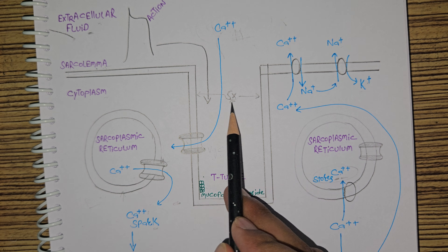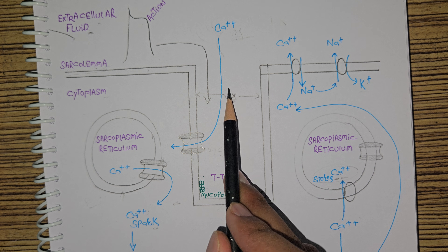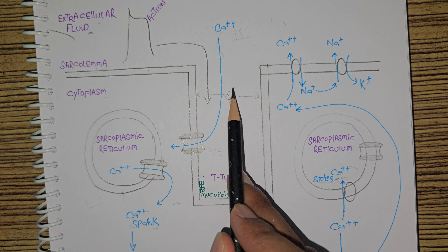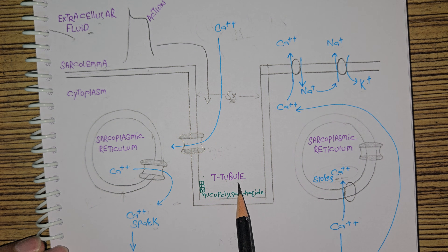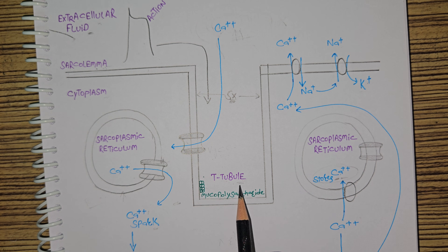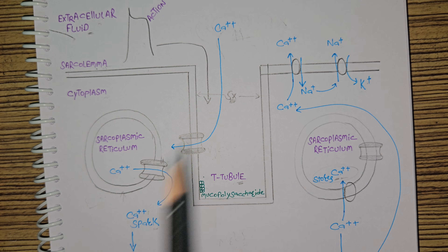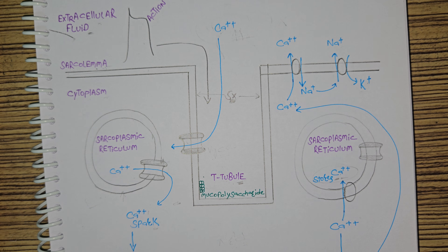The diameter of this T-tubule is five times more than in a skeletal muscle cell. This T-tubule is also present in skeletal muscle cells, but the diameter of the T-tubule in the cardiac muscle cell is five times more.